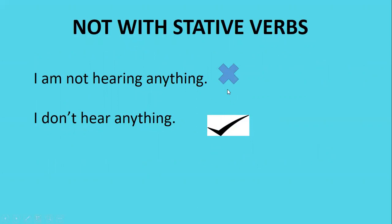'I'm not hearing anything' — the usage of 'hearing' here is wrong. The right usage is 'I don't hear anything.' This verb 'hear' is a stative verb, and that's the reason why you shouldn't add -ing along with it. For more clarification, you can watch this channel for stative verbs and dynamic verbs.